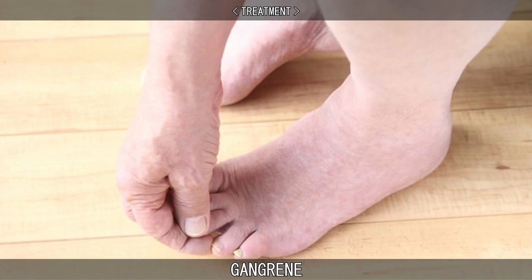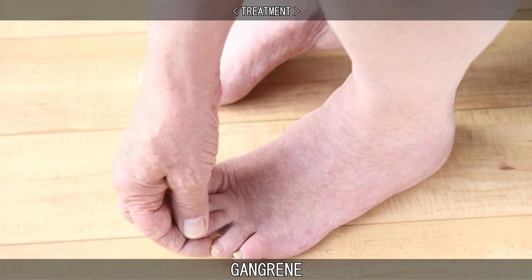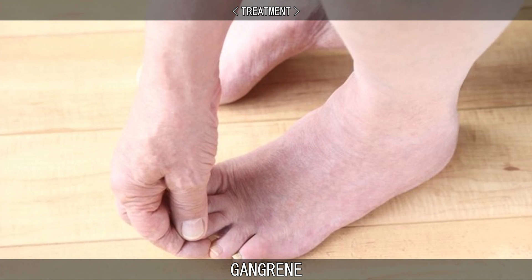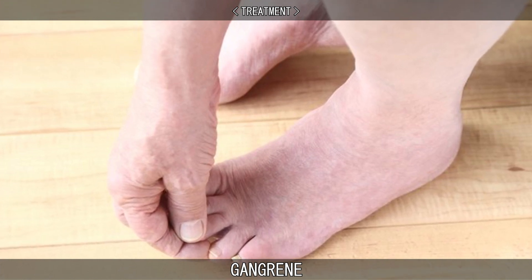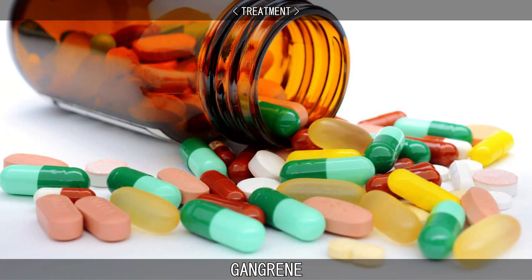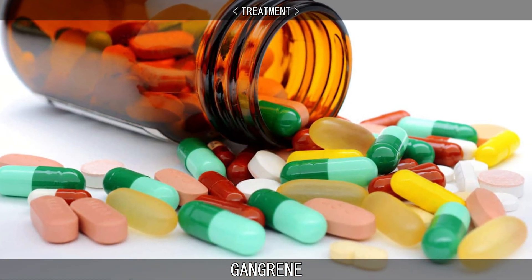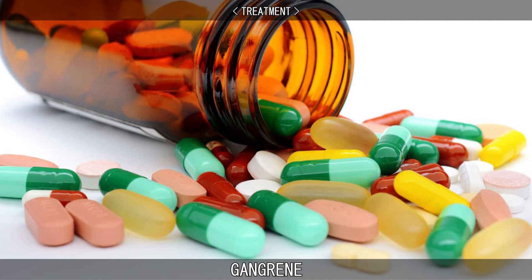Treatment varies based on the severity and type of gangrene. Exercises such as walking and massage therapy may be helpful. Medications may include pain management, antibiotics, and medications that promote circulation. Surgical removal of all dead tissue, also known as debriding, is the most effective treatment for gangrene as there is often an underlying infection which risks spreading to the rest of the body. Depending on severity, this may include amputation of a finger or toe or the entire limb.